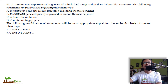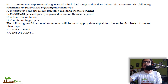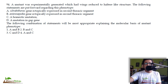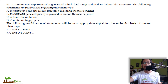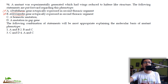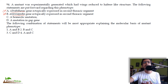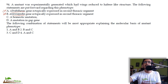Now another question: a mutant was experimentally generated which had wings reduced to haltere-like structures. Following statements are put forward regarding this phenotype. This question is about Drosophila wing development, so when you read the first part you already know it involves gene names like Ultrabithorax and Antennapedia. If you don't know these genes you should leave the question, but I believe you can approach it even without knowing exactly what they do.